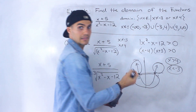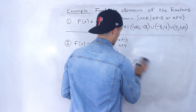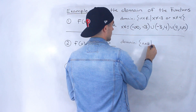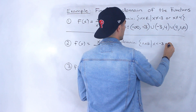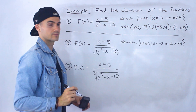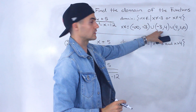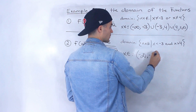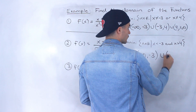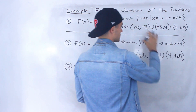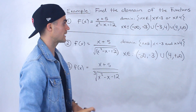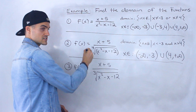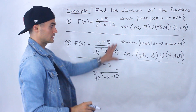In interval notation, the domain is from negative infinity to negative 3 — not inclusive — union from 4 to positive infinity. This is the same as the first function's domain except that middle interval is excluded. This same domain would apply if it were the fourth root, sixth root, or any even root, since none of them can be applied to a negative number.